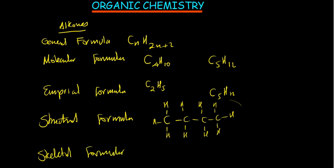The skeletal formula does not show any hydrogens — only the carbon skeleton. For a four-carbon alkane, we draw a zigzag: first carbon, second carbon, third carbon, fourth carbon. That zigzag line is the skeletal formula.